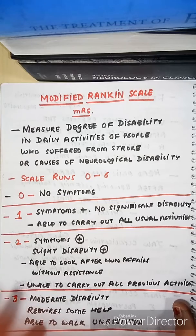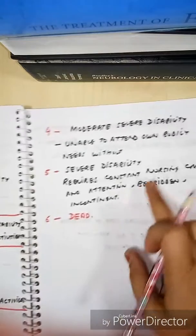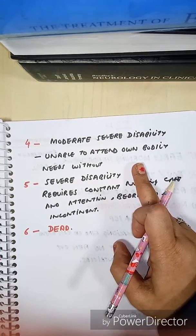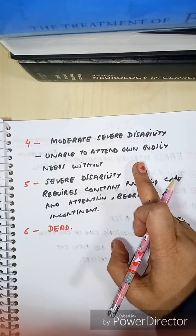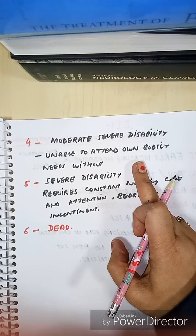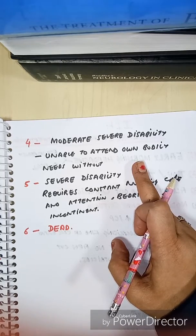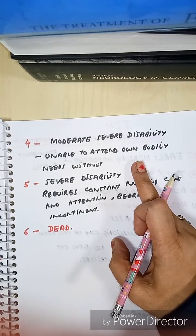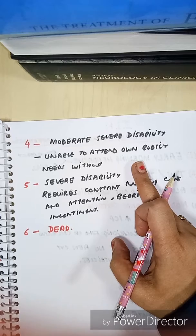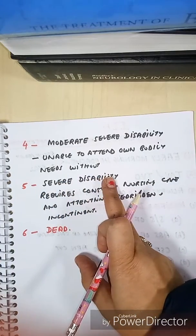In grade 3, the patient has moderate disability, requires some help, but is able to walk unassisted. How to differentiate between grade 3 and grade 4: in grade 4, the patient has moderately severe disability — he is unable to attend to his own bodily needs without assistance, and he needs assistance to walk, such as a cane or crutch.